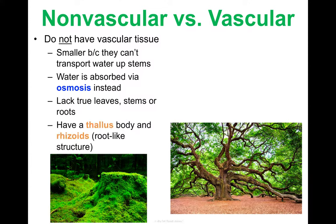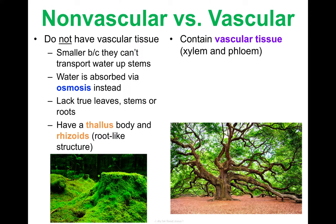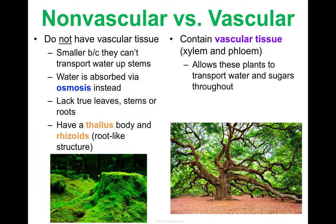Nonvascular plants don't have true leaves, stems, or roots — that is another major structural absence. Instead, the body part is called the thallus, and they have rhizoids, which are root-like structures that allow them to absorb water via osmosis. Here's a picture of moss, a nonvascular plant, growing over rocks and an old tree stump. Much different from a massive tree, which is a vascular plant. Vascular plants have vascular tissue — xylem and phloem — which allows them to move water and sugars throughout the plant, so they can be much bigger and have specialized organs: roots, stems, and leaves.